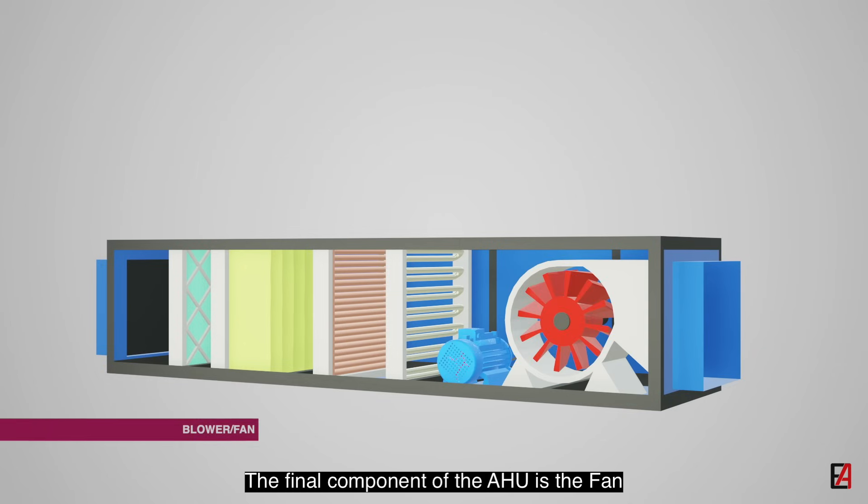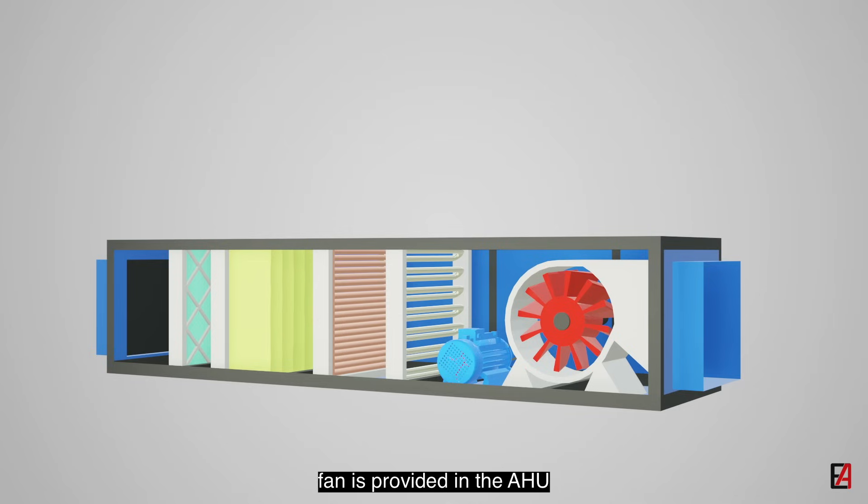The final component of the AHU is the fan. To push the outside air to the building spaces, the fan is provided in the AHU, which pushes the outside air into the building with the help of the ventilation system ductwork. These fans can be either single speed, dual speed, or can be equipped with variable frequency drives to control the speed of the fan. Fan is placed at the end of the AHU.